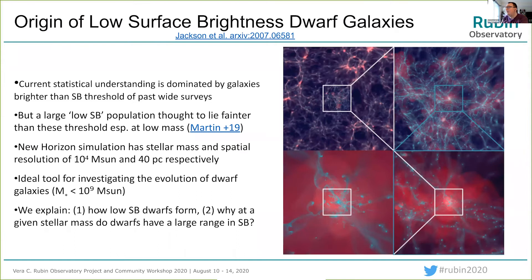Next we'll hear from Ryan Jackson on the origin of low surface brightness dwarf galaxies. Hi everyone, I'm Ryan, a PhD student from the University of Hertfordshire. Our statistical understanding of galaxy evolution is fundamentally driven by objects that are brighter than the surface brightness limits of current wide area surveys. Therefore, our comprehension of galaxy evolution is largely restricted to relatively bright galaxies. However, both theory and observational work are starting to indicate that many galaxies are fainter than the surface brightness limits of these surveys, especially at the low mass end.